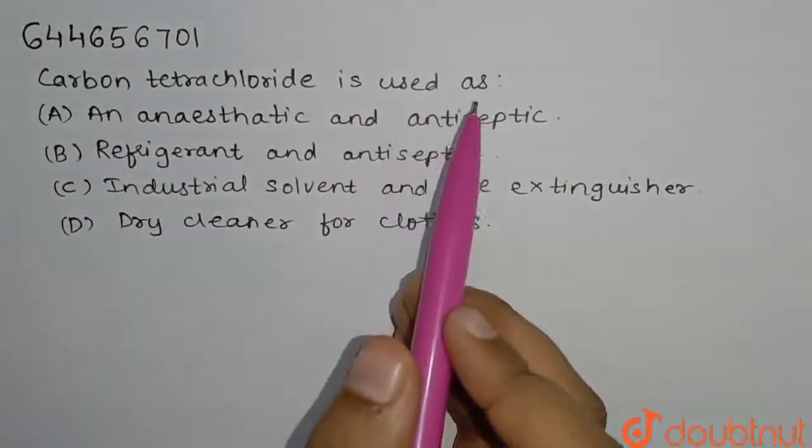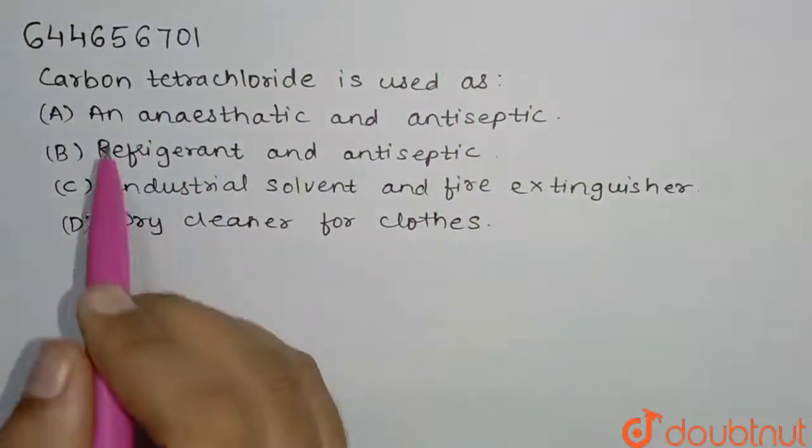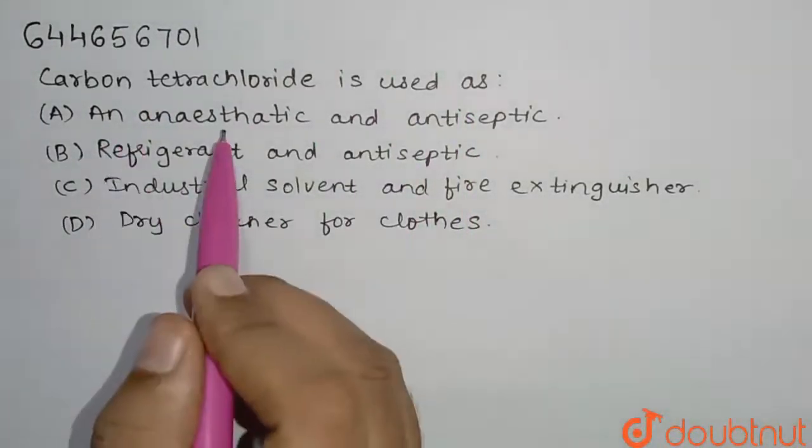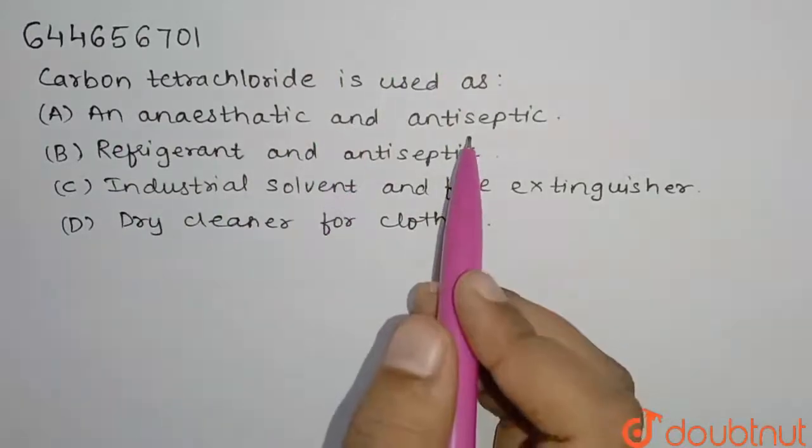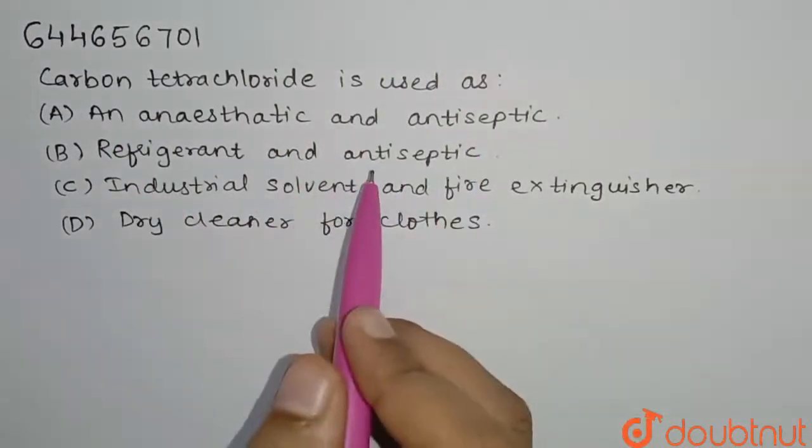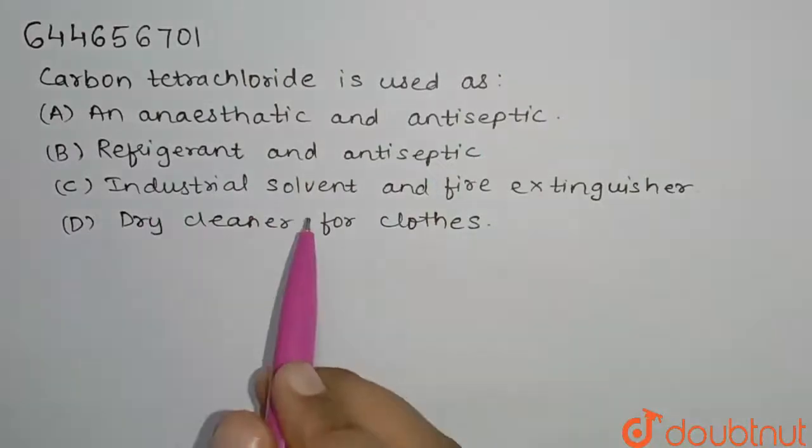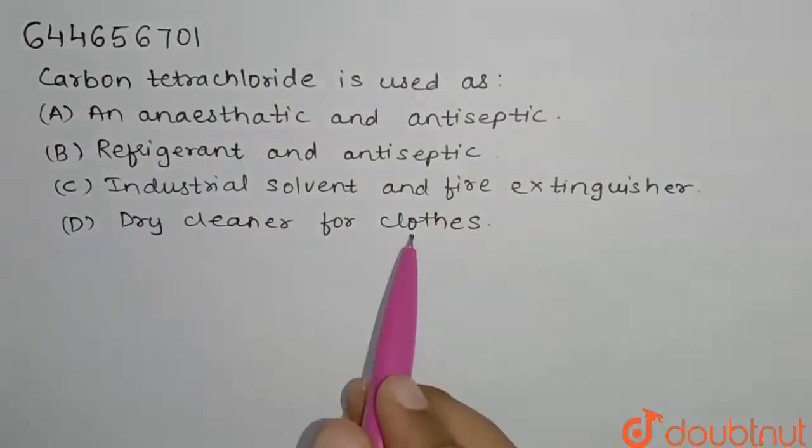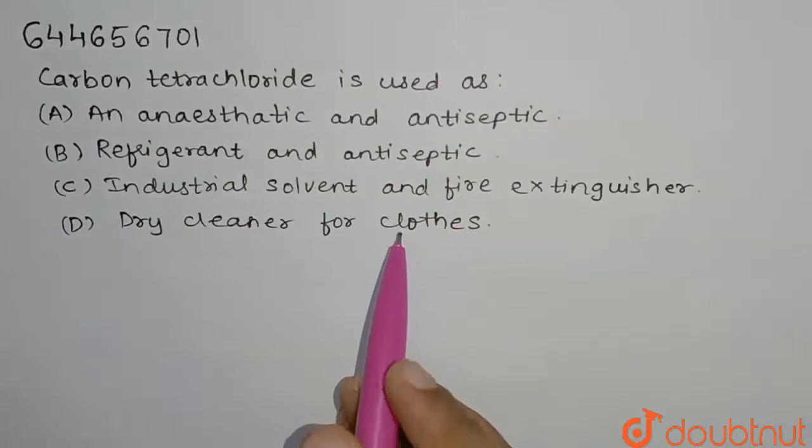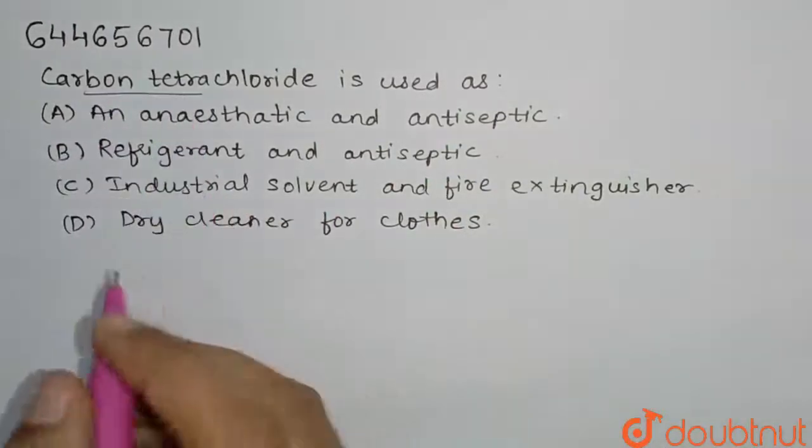is used as, and we have different options here. Carbon tetrachloride can be used as: (A) an anesthetic and antiseptic, (B) refrigerant and antiseptic, (C) industrial solvent and fire extinguisher, (D) dry cleaner for clothes. So here we have carbon tetrachloride,